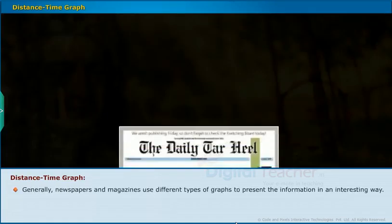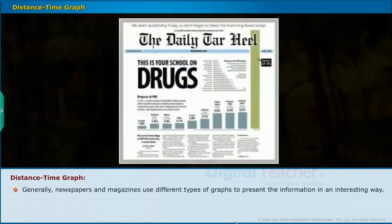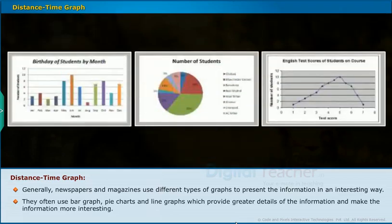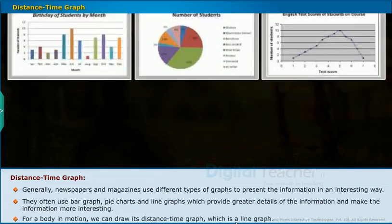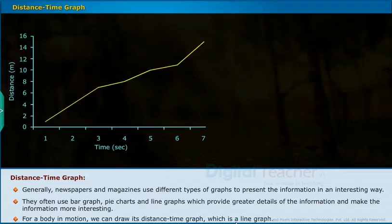Now, let us discuss the distance versus time graph. Generally, newspapers and magazines use different types of graphs to present information in an interesting way. They often use bar graphs, pie charts, and line graphs which provide greater details of the information and make the information more interesting. For a body in motion, we can draw its distance-time graph which is a line graph.